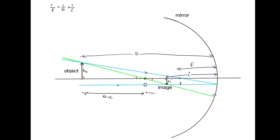and then the distance from here to here. This is distance I, so this is C minus I. So then using these two similar triangles, we can say that H O over H I is equal to O minus C over C minus I.